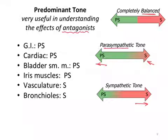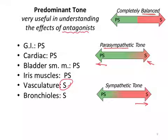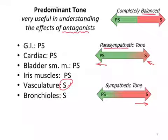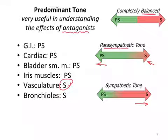Conversely, in a tissue where tone is sympathetic — take the vasculature controlling blood pressure — alpha-1 adrenergic antagonists are very useful for managing blood pressure because sympathetic tone dominates there. When we block that sympathetic tone, we get a significant clinical effect. But if instead we used a muscarinic antagonist targeting the parasympathetic side for the same purpose, it would have very little effect on blood pressure.